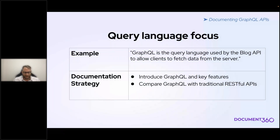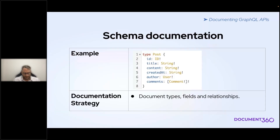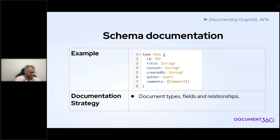Next is schema documentation. You're going to want to provide concise explanations for each type — like the blog API's post, user, and comment types. Document fields with their data types and purposes, and describe the relationships between types. For example, the one-to-many relationship between post and comments: you can have one post with many comments. You want to document that.